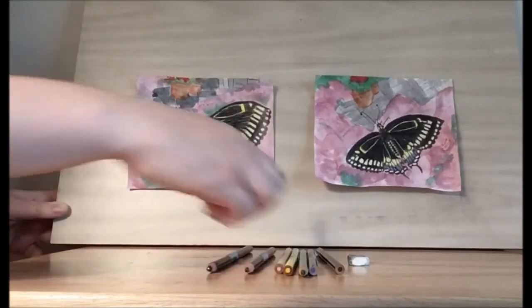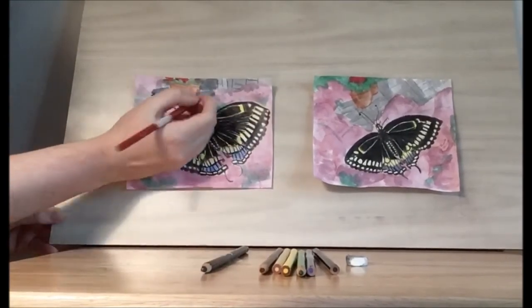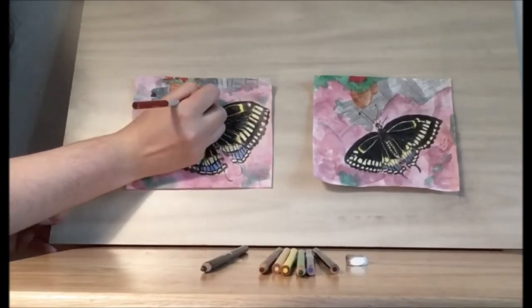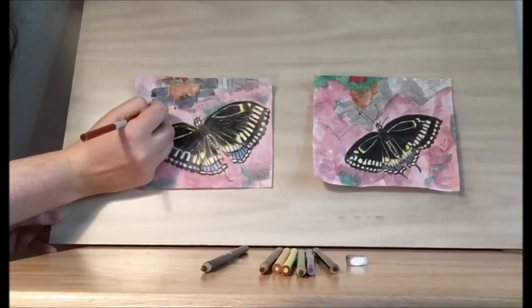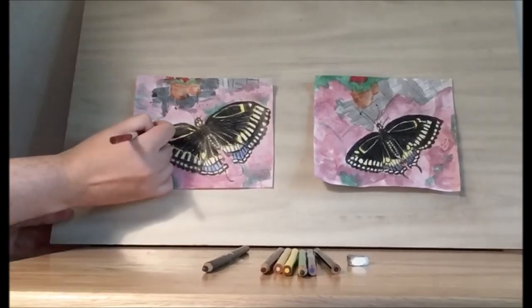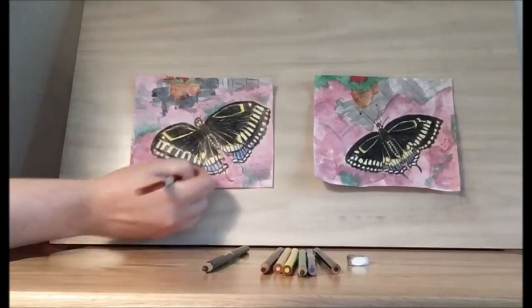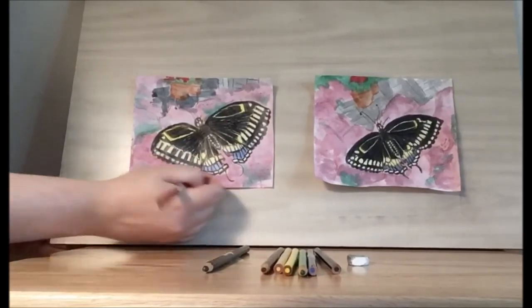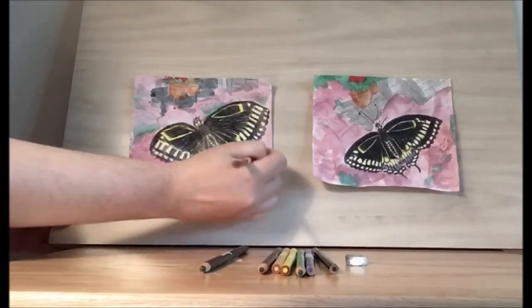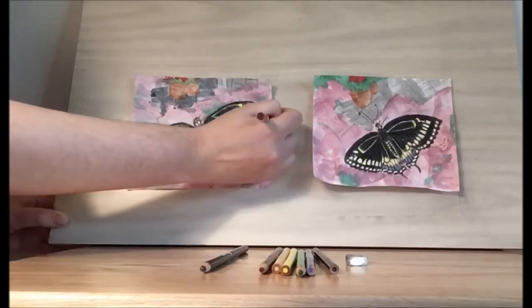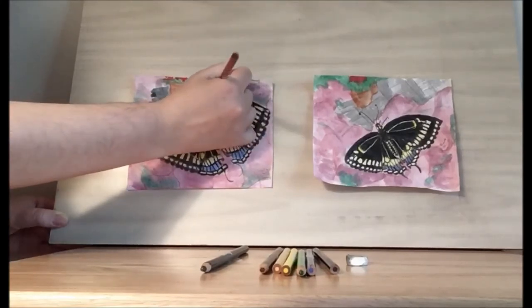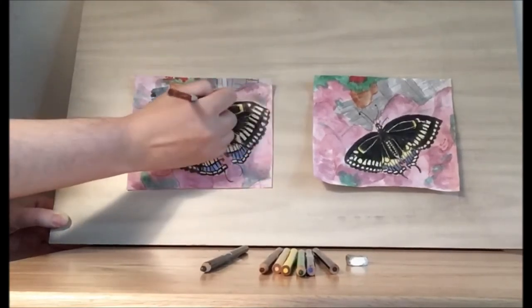Once you're happy with your bricks you can take the red or pink color and go in and add some edges to your flowers. Since the butterfly is very large we want the petals to be large too. And this is just to help emphasize the idea of the petals. You don't want to be too detailed here either because we want the focus to stay on our butterfly.